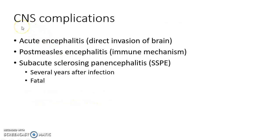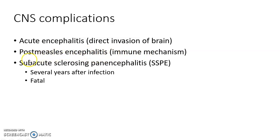The CNS complications of measles include acute encephalitis due to direct invasion of the brain by the virus, post-measles encephalitis due to an immune mechanism, and subacute sclerosing panencephalitis, which occurs several years after measles infection and is almost always fatal.